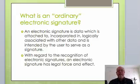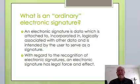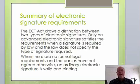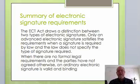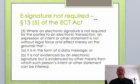An ordinary electronic signature is an electronic signature in the form of data which is attached to, incorporated in, or logically associated with other data, and is intended by the user to serve as a signature. An electronic signature has legal force and effect. To summarise: the ECT Act draws a distinction between two types of electronic signatures. Only an advanced electronic signature satisfies the requirements when a signature is required by law and the law does not specify the type of signature required. When there are no formal legal requirements and the parties have not agreed otherwise, an ordinary electronic signature is valid and binding.